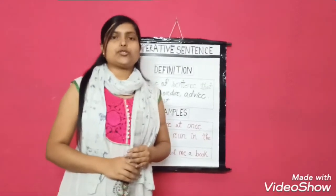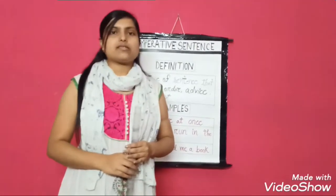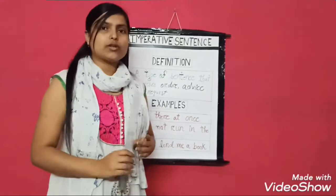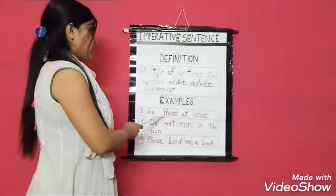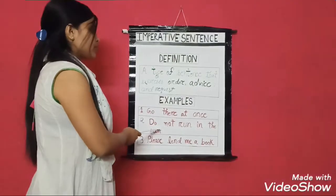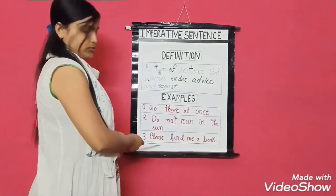So, in order to know what an imperative sentence is, let us first have a look at these examples. Go there at once. Do not run in the sun. Please lend me a book.